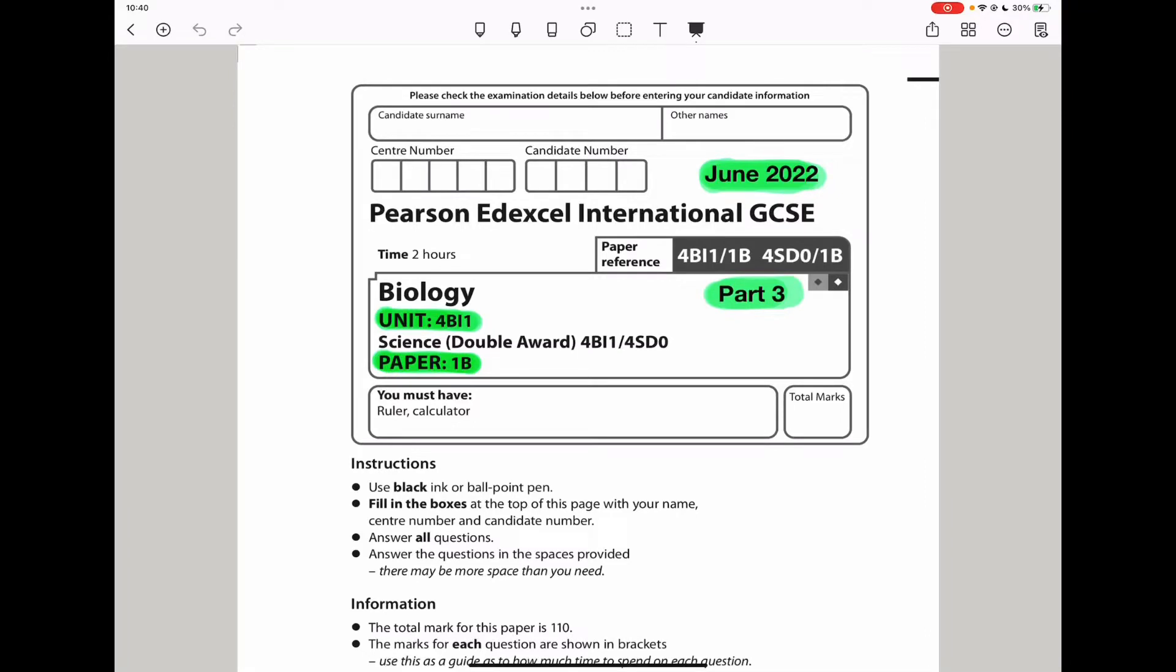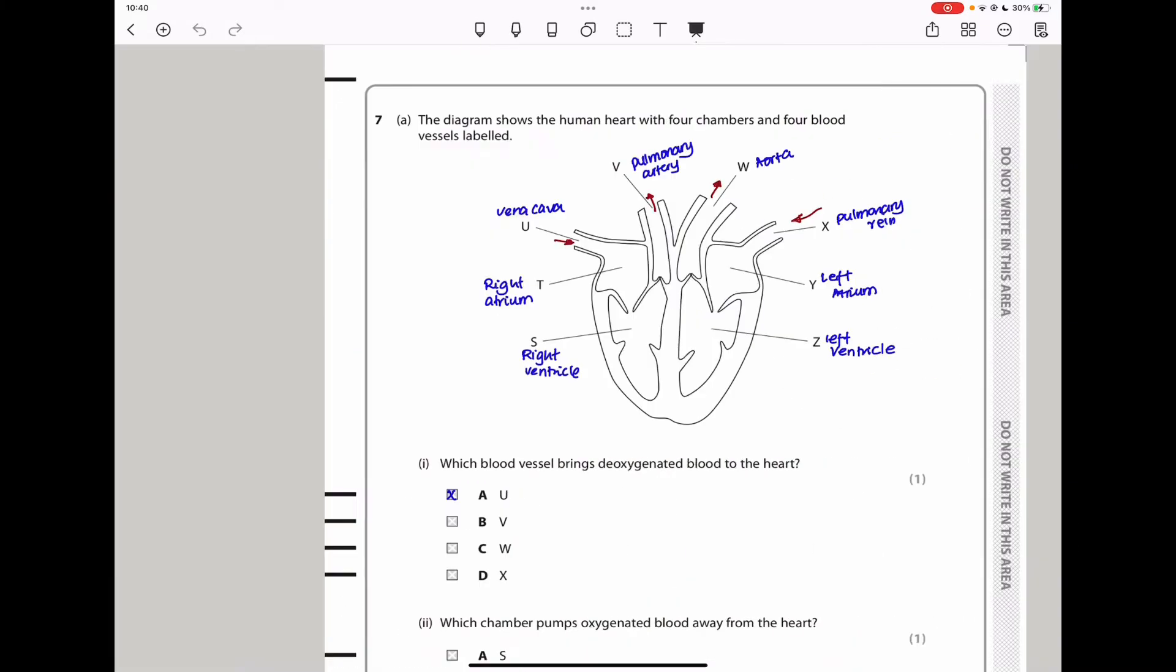Welcome to the Chemistry, Biology, and Math Revision Hub. Today we are doing the Pearson Edexcel International GCSE Biology Paper 1B for June 2022. This is the third video. I will put the link to the first part and the second part video below the discussion box. Let us begin.